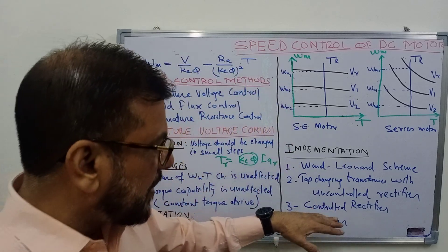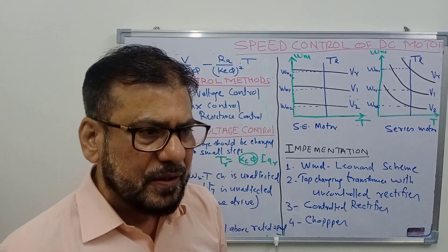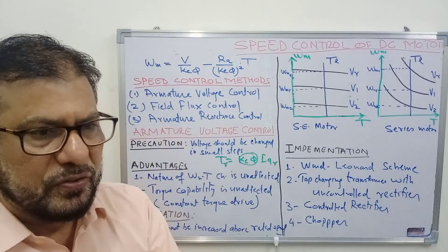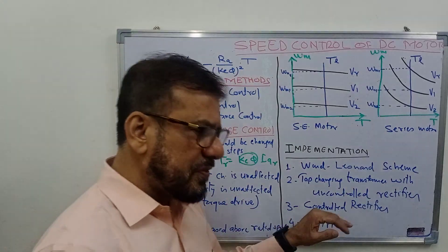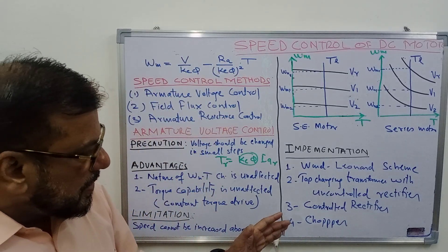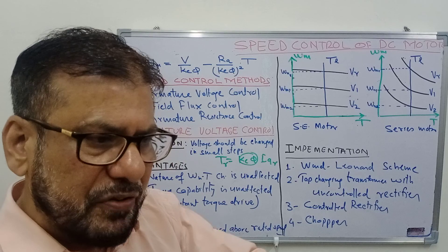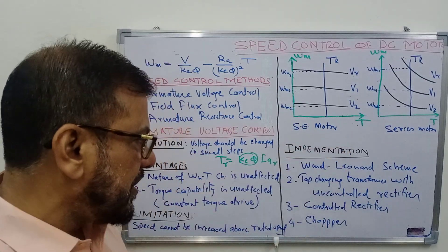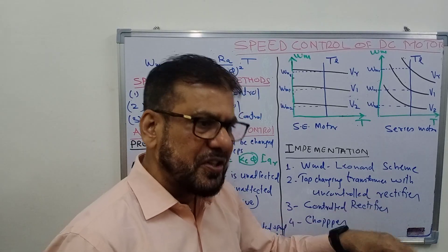A third implementation method uses a controlled rectifier with a thyristor bridge, where changing the firing angle of the thyristors changes the average output DC voltage supplied to the motor to control its speed. If the supply is DC, another option is a chopper (DC-DC converter), where changing the duty ratio changes the average output voltage and hence the motor speed. The controlled rectifier method and chopper control method will be discussed in detail in the coming lectures.